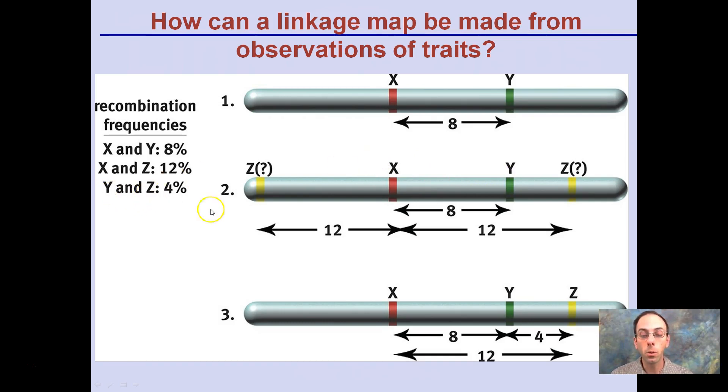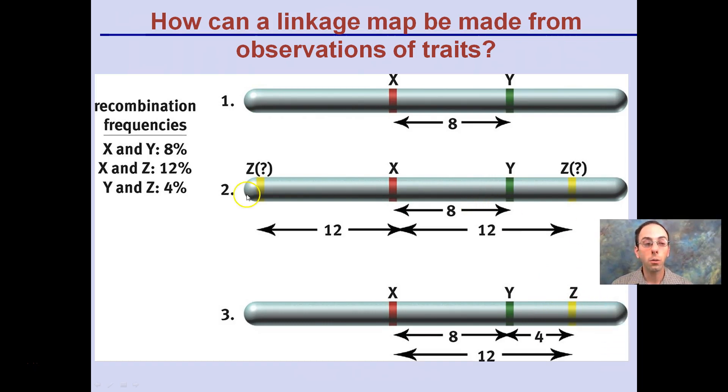Knowing that Y and Z are 4%, so Z is 4 units away from Y, we then can make the conclusion that Z is over in this way. See, initially here without this information, we know where X is. We know Z is 12 units away, but we don't know if it's left or right. But by getting that information that is also 4 units away from Y, 8 plus 4 is 12, and there's our X, there's our Y, and that's where our Z would be located. With this information, we're able to eliminate the possibility that Z is located over here.